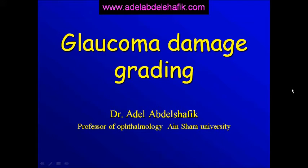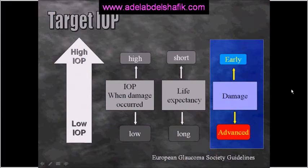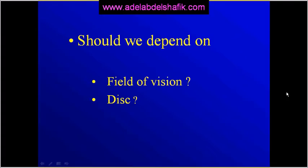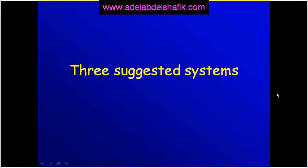My talk will be about how to decide the amount of glaucoma damage using disc and field changes. This is important when you are choosing a target intraocular pressure for your patient. If the damage is marked then you should go for low intraocular pressure; if the damage is minimal then you can go for high intraocular pressure. Should we depend on the field, the disc, or both? I'm going to explain three systems you can choose from and follow during your practice.